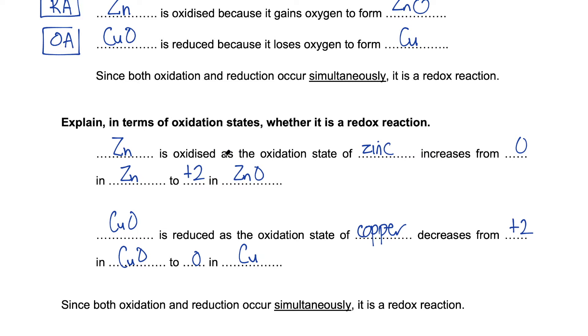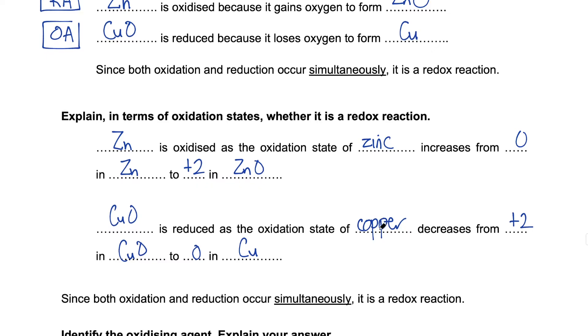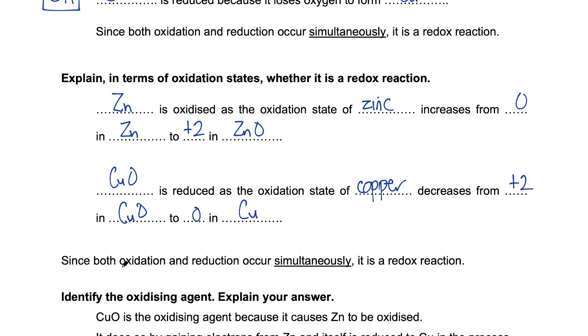So I want you to take note of how I fill in the blanks over here. For the chemical formula, you note that I'll just pull it off the equation. And we refer to the oxidation state. We try to be as clear as possible. We name the element rather than write its formula. And we always end off with the concluding statement. Since both oxidation and reduction occurs simultaneously, it is a redox reaction.